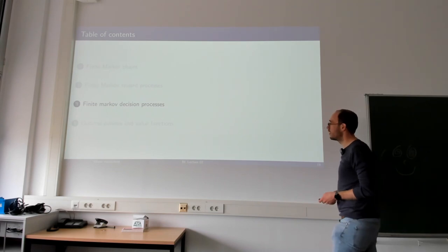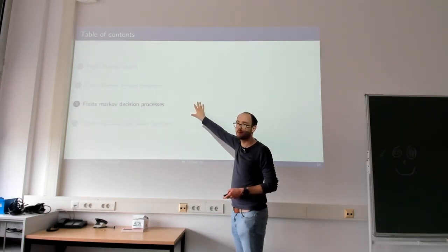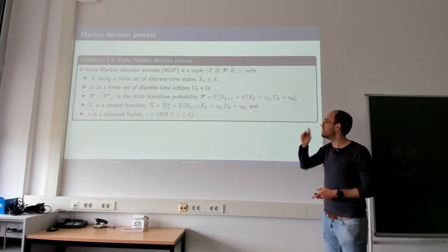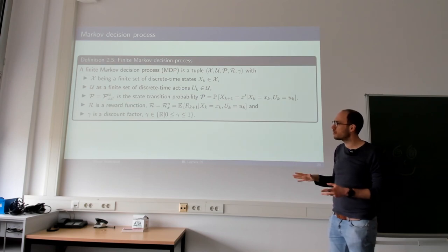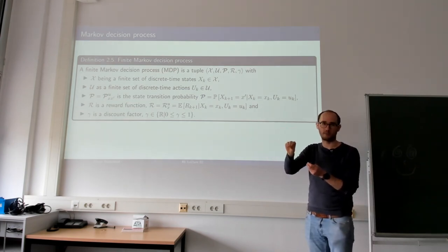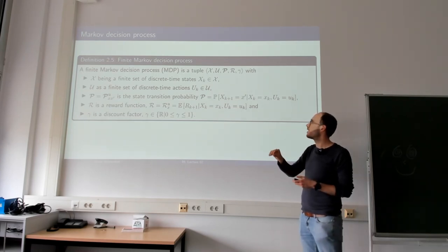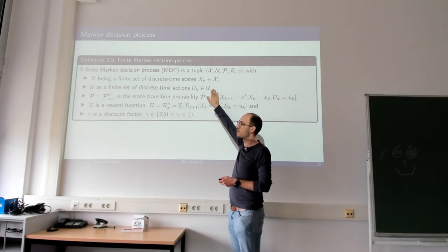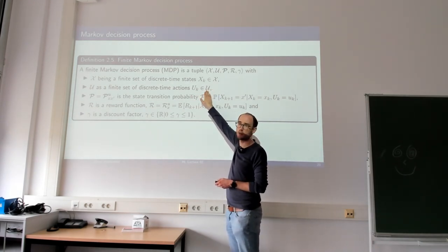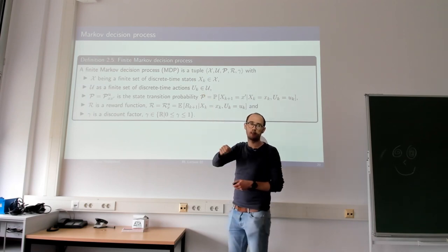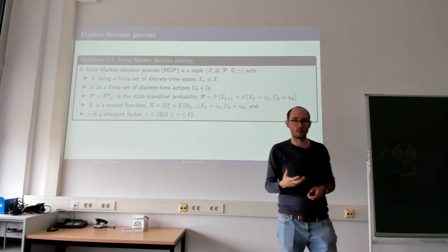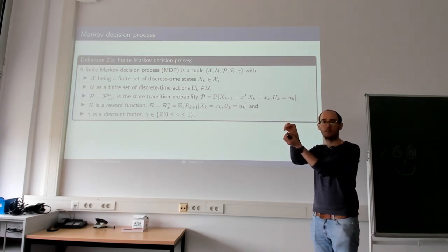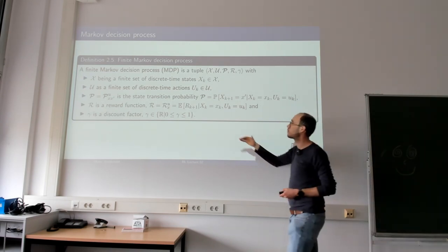Now we extend the problem space one final time for this course: finite Markov decision processes. Building on Markov reward processes, we now introduce actions u and the action space curly U. This is the first non-autonomous problem definition, where we as engineers - or later our reinforcement learning algorithms - have an entry point to interact with and manipulate the system through decisions.